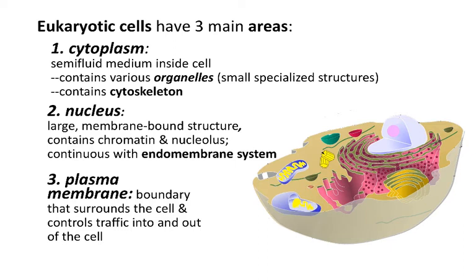So eukaryotic cells have three main areas. The first is the cytoplasm. It is a gel-like material inside the cell membrane. It's what the organelles are embedded in. It's the site of most metabolism in our cells, and in our bodies for that matter. And it contains a set of structures that are referred to as the cytoskeleton. The second area is the nucleus and the endomembrane system, and the third is the plasma membrane.